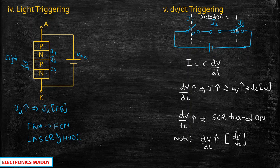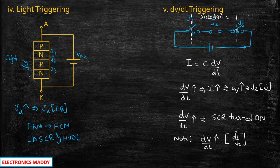So there are five different methods to turn on an SCR, and how we analyze these methods is what was taught in this video. I hope this video gave you a clear understanding of the various turn on methods of SCR. In case you have any questions, feel free to reach out by typing in the comment section below. If you like this video, please like it, share it, and subscribe to our channel for regular updates. Thanks.